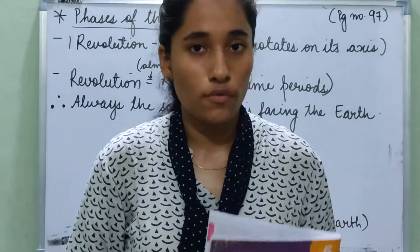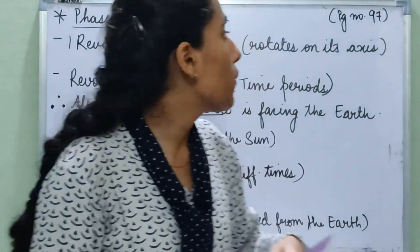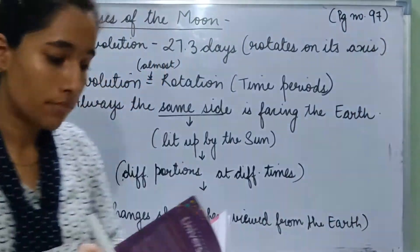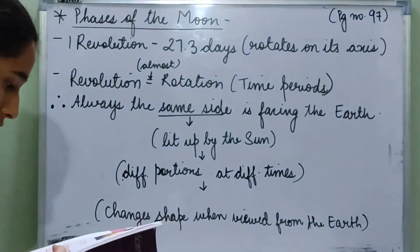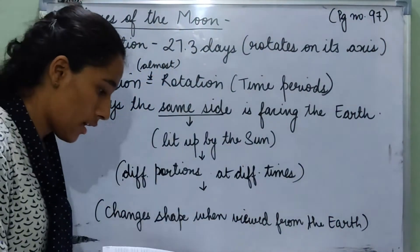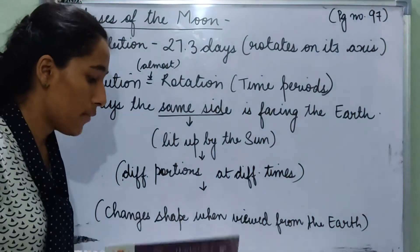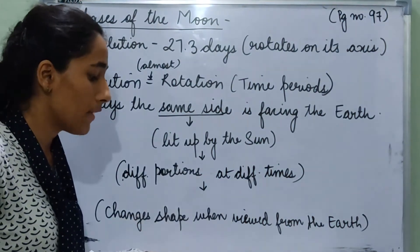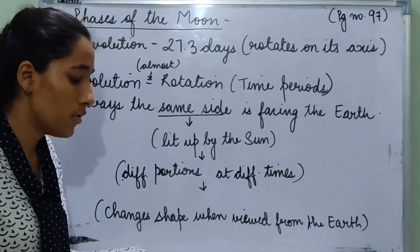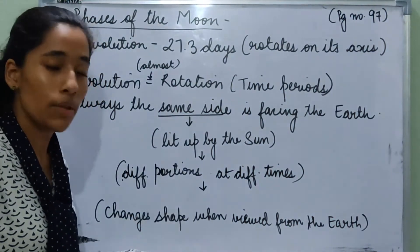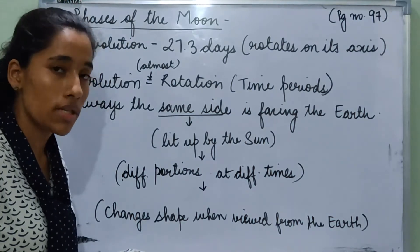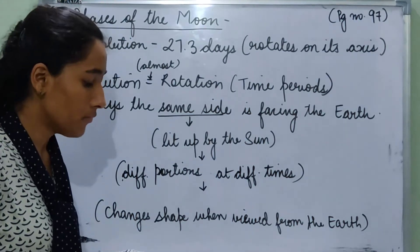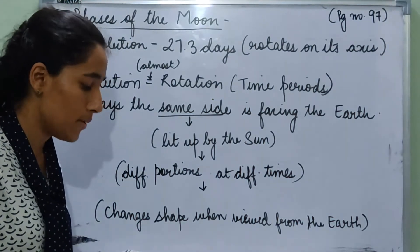So first of all, open your books on page number 97. We are going to read the topic phases of the moon. Get ready with your pencils to underline the important lines, and read with me.